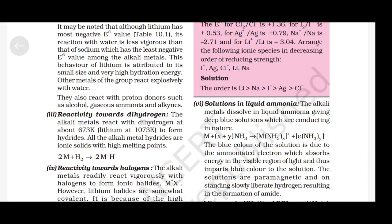The alkali metals react with dihydrogen at about 673 K (lithium at 1073 K) to form hydrides. All alkali metal hydrides are ionic solids with high melting points. Reaction: 2M + H₂ → 2M⁺H⁻.